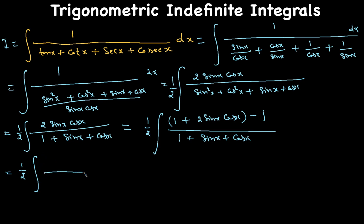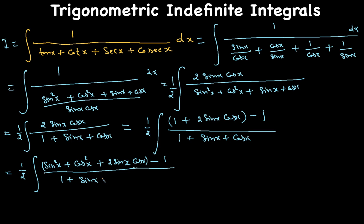Rewriting 1 as sin²x plus cos²x, the numerator becomes sin²x plus cos²x plus 2 sin x cos x minus 1, over (1 plus sin x plus cos x). Notice that sin²x plus 2 sin x cos x plus cos²x is a perfect square: (sin x plus cos x)², using the identity (a+b)² equals a² plus 2ab plus b².